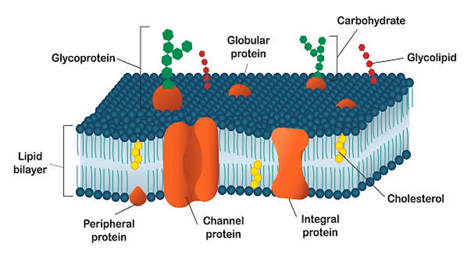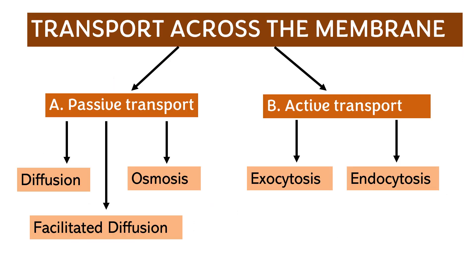The fluidity of the cell membrane is very essential to its ability to control the movement of substances into and out of the cell. There are two major ways materials are transported across the cell membrane: passive and active transport. Passive transport is a type of transport that does not require the use of energy. The energy of the cell is called ATP — adenosine triphosphate — the energy currency of life.